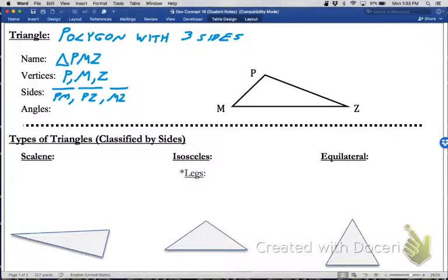If a triangle has three sides, it also has three angles. Those angles would be written with the angle symbol: angle P, angle M, and angle Z. So that's how we can name the parts of a triangle, and we're going to talk more specifically about those parts here soon.